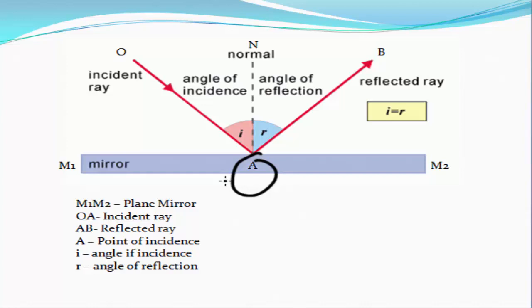The ray OA is called the incident ray and the ray AB is the reflected ray. I is the angle of incidence and R is the angle of reflection of the light. The line AN is the normal.